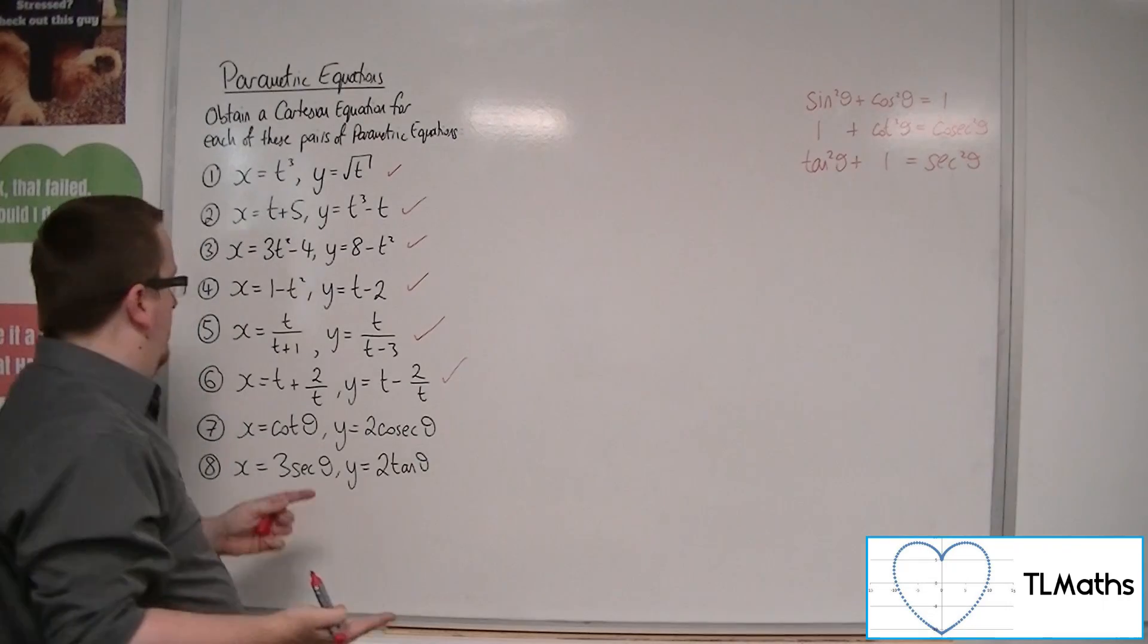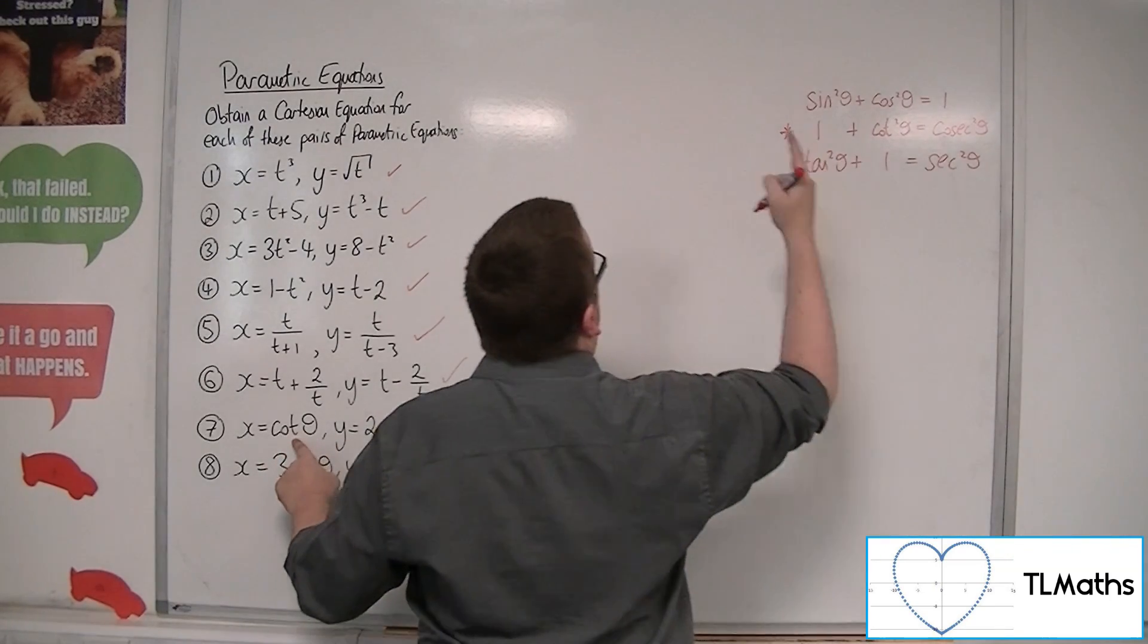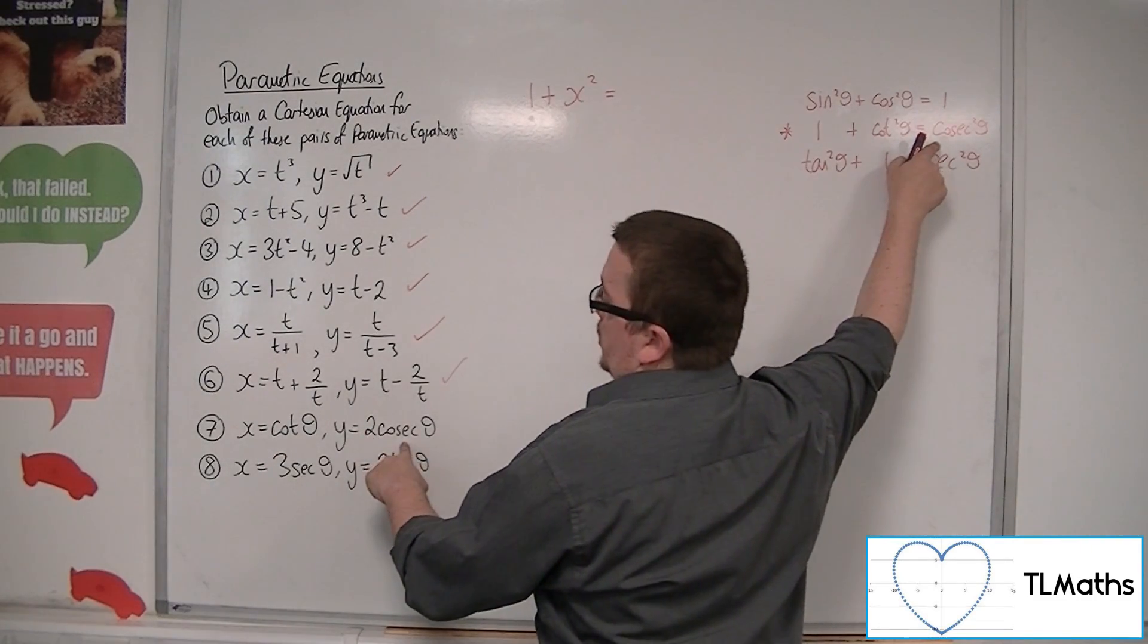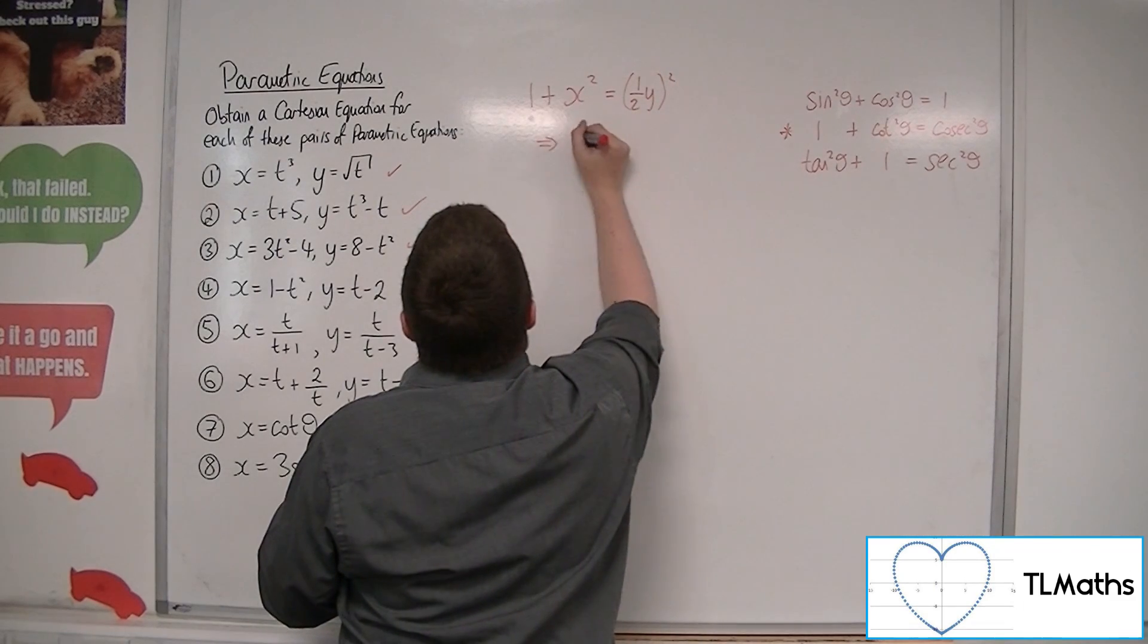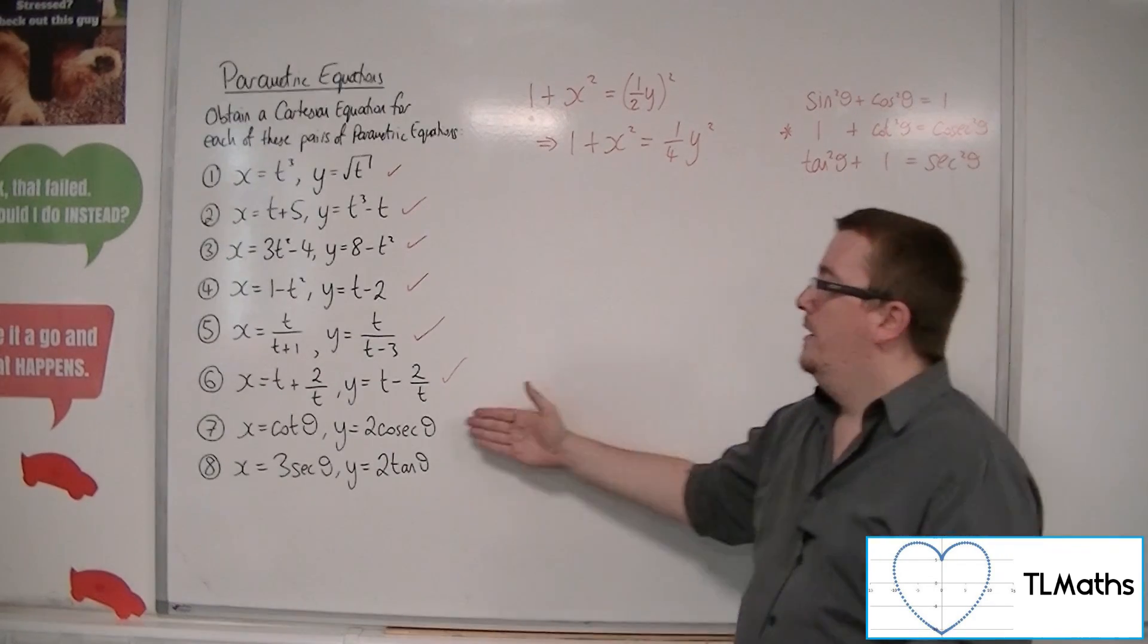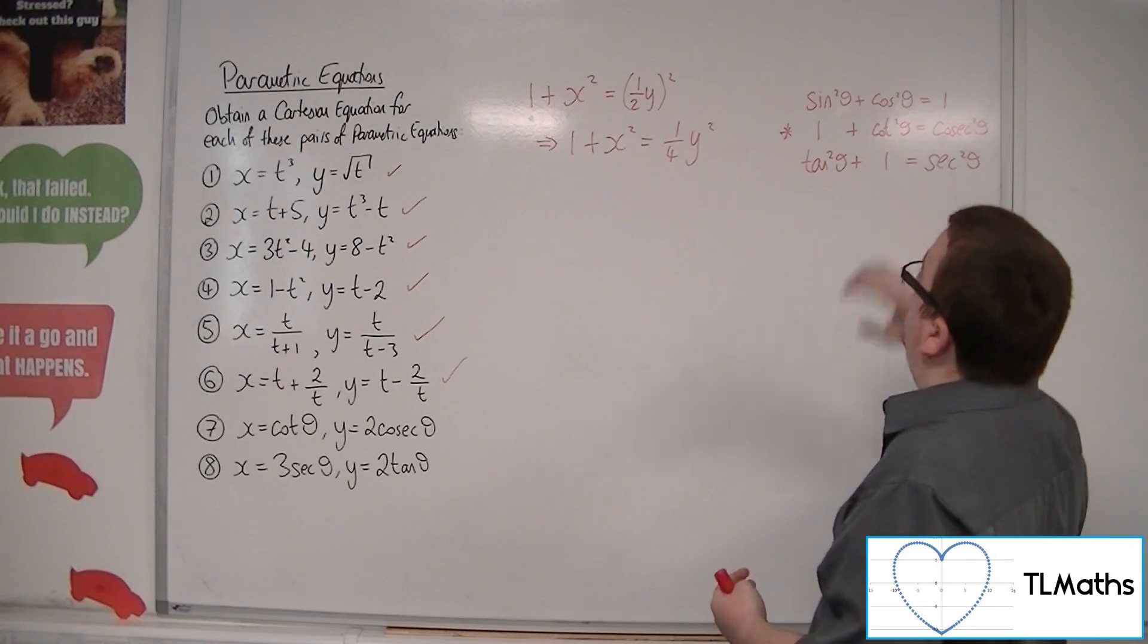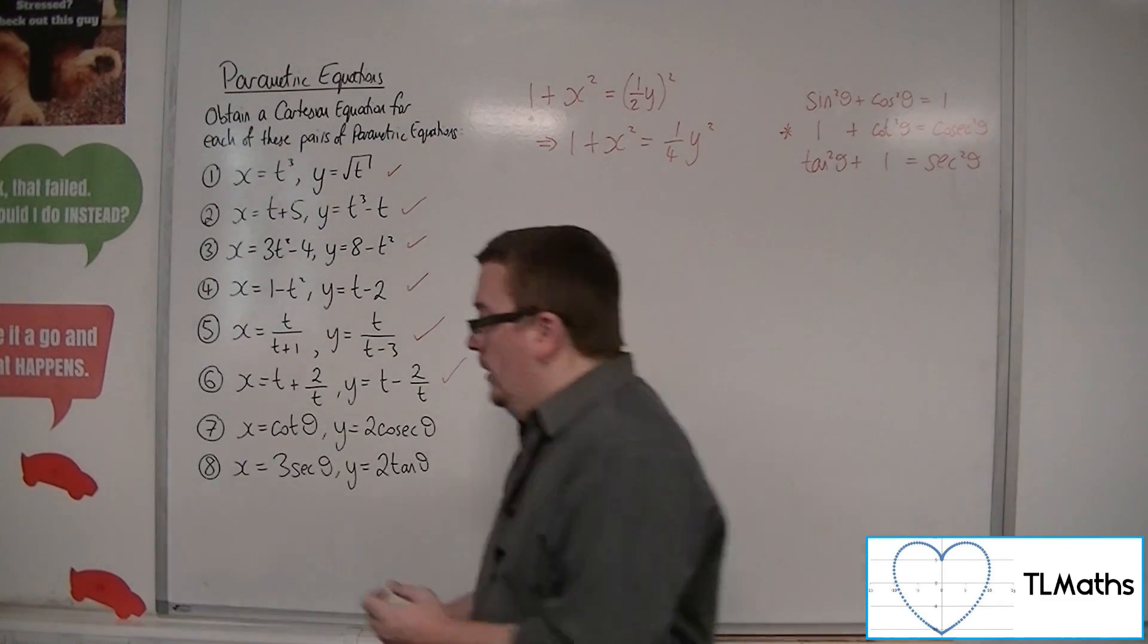So, if we have a look at number 7 here, we've got cot and cosec, which fits into this one here. So, we know that cot theta is x. So, we could say 1 plus x squared, 1 plus cot squared, is equal to cosec squared. And cosec theta would be y over 2, halving both sides. So, that would be 1 half y squared. So, you could write that as 1 plus x squared is equal to a quarter y squared. And that would be your Cartesian equation that matches those parametric equations. So, if you spot parametric equations that involve trigonometric functions that fit nicely into any of these identities, then we can use those identities for substituting in. So, that's number 7.